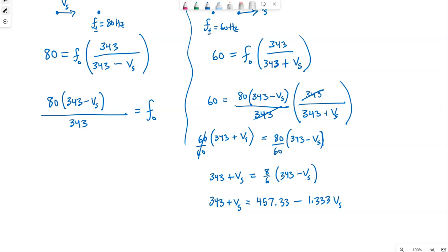Let's get the V S terms together, I'll bring it to the left, so it's positive, and then subtract the 343. Divide by the 2.333, I'm getting 49.0007.